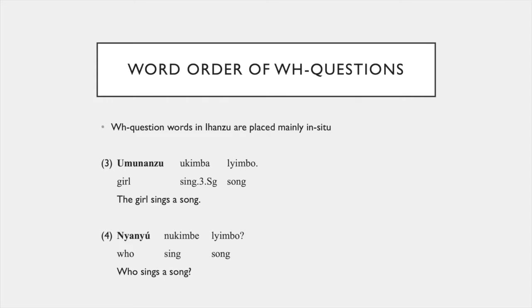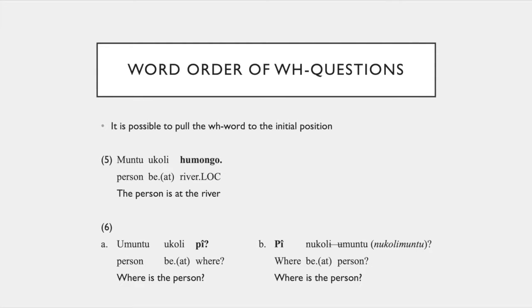This also works with 'who'. So 'umunansu ukimba limbo', and if we ask 'who sings the song?', we have 'nyanu ukimba limbo'. Something grammatically changes there — we'll get into that as the presentation goes on. It is also possible to pull the WH word to the initial position, but this was never the natural reaction from Nico, the speaker. He always used the in situ version first, and I specifically asked what would happen if we pull the word to the front.